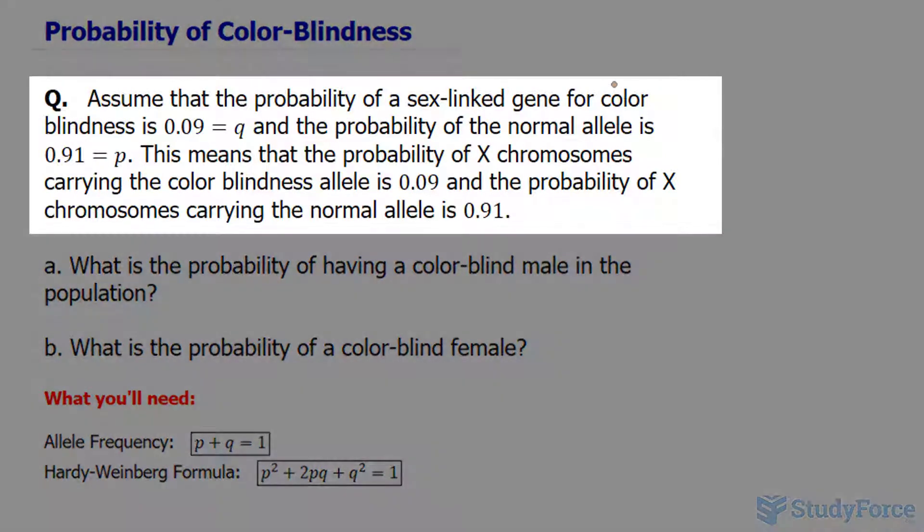The question reads: assume that the probability of a sex-linked gene for colorblindness is 0.09 and the probability of the normal allele is 0.91.